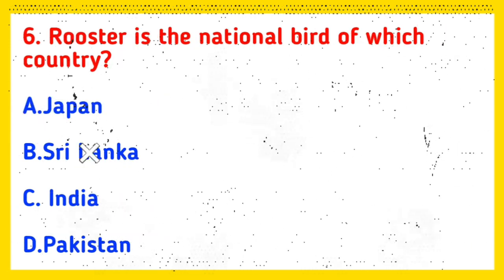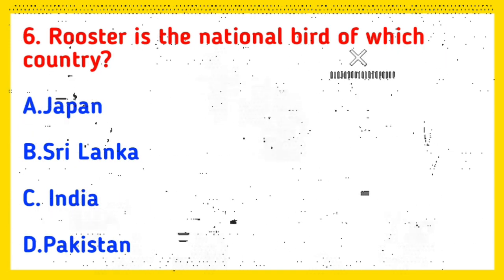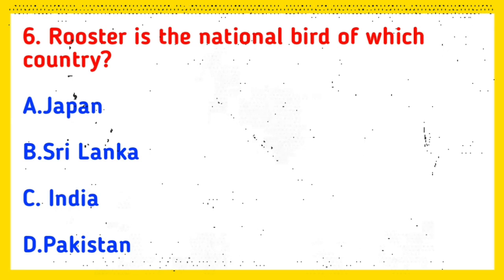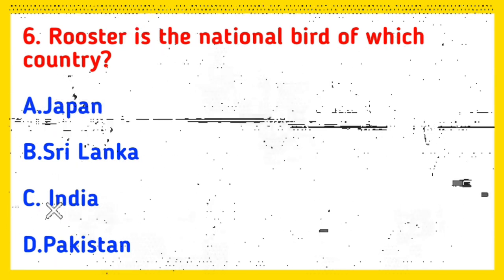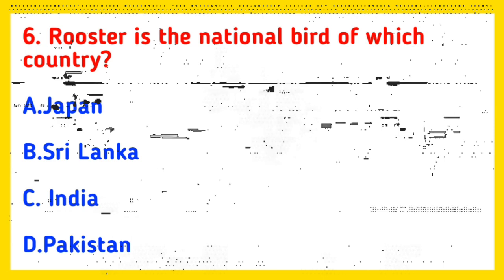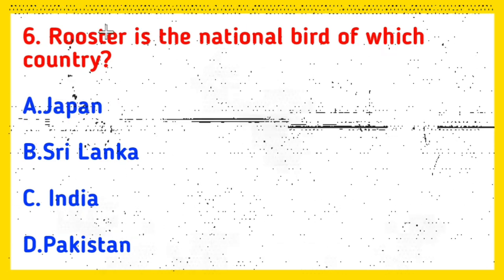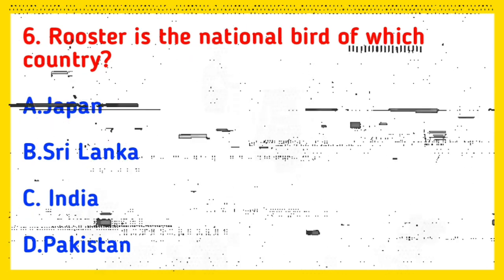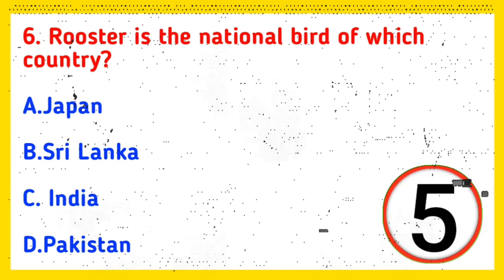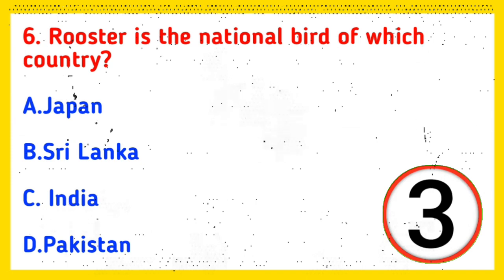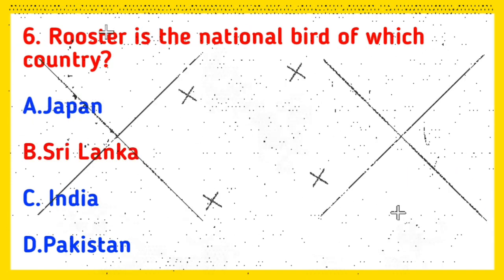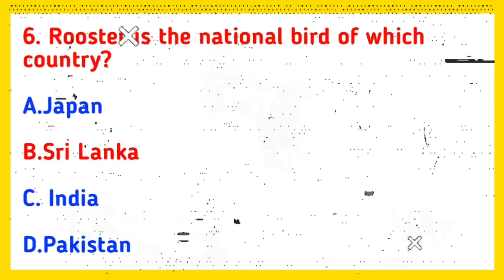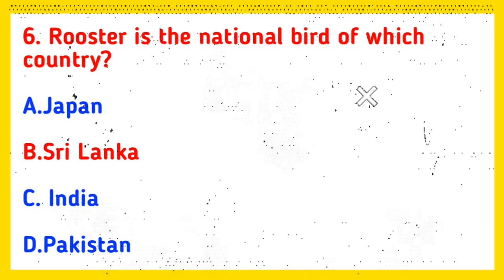Q6: Rooster is the national bird of which country? Option A: Japan, Option B: Sri Lanka, Option C: India, Option D: Pakistan. And the correct answer is Option B, Sri Lanka.